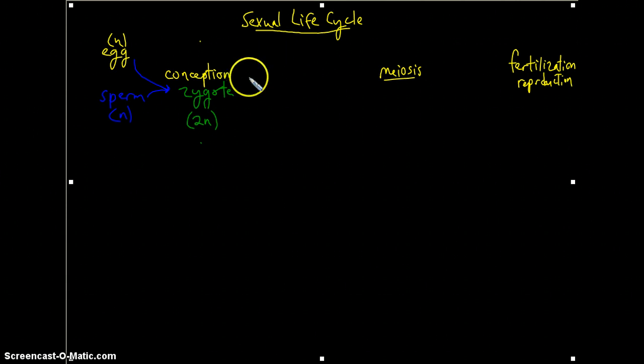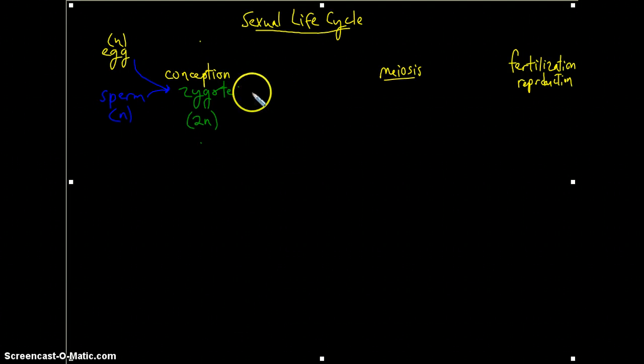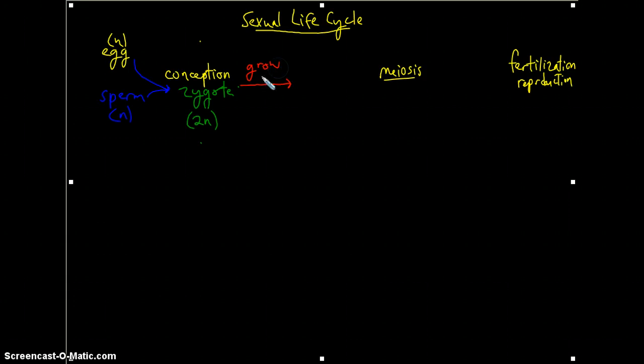Now, this zygote will then undergo mitosis and grow and develop. So here we have growth and development, and as is how I've expressed it to my own children, you finish grad school and get a stable job and all these good things, and you end up becoming this adult that has reached sexual maturity and is then ready for reproduction.